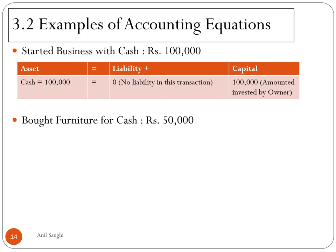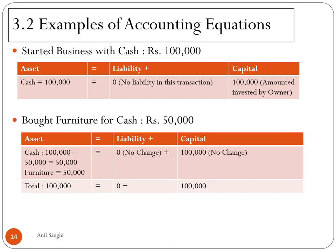The next day the business buys furniture for cash of Rs. 50,000. Cash reduces from Rs. 1,00,000 to Rs. 50,000 because Rs. 50,000 is paid out, and furniture of Rs. 50,000 comes into the organization — furniture is also an asset. So you have cash of Rs. 50,000 and furniture of Rs. 50,000, together making Rs. 1,00,000. There is no change in liability and no change in capital — the change is only in the asset side. A business transaction can impact assets and liabilities, assets and capital, or just a liability — all combinations are possible.